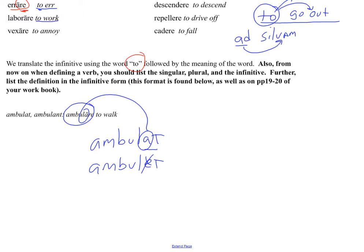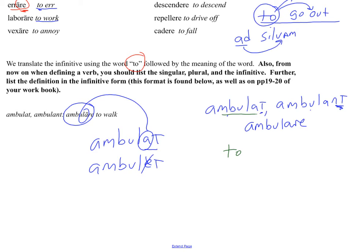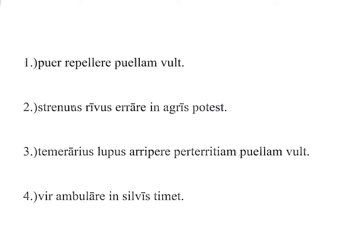You can do this one of two ways: by showing me the third person singular followed by the third person plural — singular T, plural NT — so that's 'he walks, they walk,' and then the last part you would have the infinitive. Whenever you're putting the definition of that word, I want you to use the word 'to' instead of 'he walks' or 'they walk.' Put 'to' plus whatever that word is defined as. That's an introduction to how we'll use the infinitive.